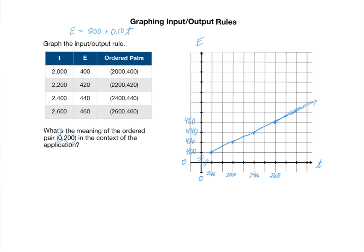When you're interpreting the meaning of an ordered pair with respect to an application, you can always write the statement in if-then form. So if he sells $0 worth of food, then he makes $200. Now in this particular case, he actually did get paid more than what he sold. But if this were to continue very long, the company would not stay in business since they're not making any money.